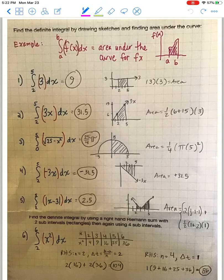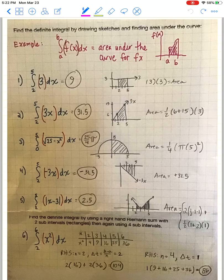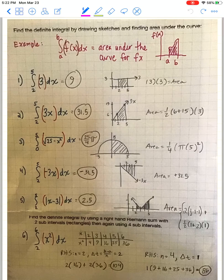That's great for the first five problems because the area under those curves were creating squares, rectangles, trapezoids, maybe even a quarter of a circle in number 3.